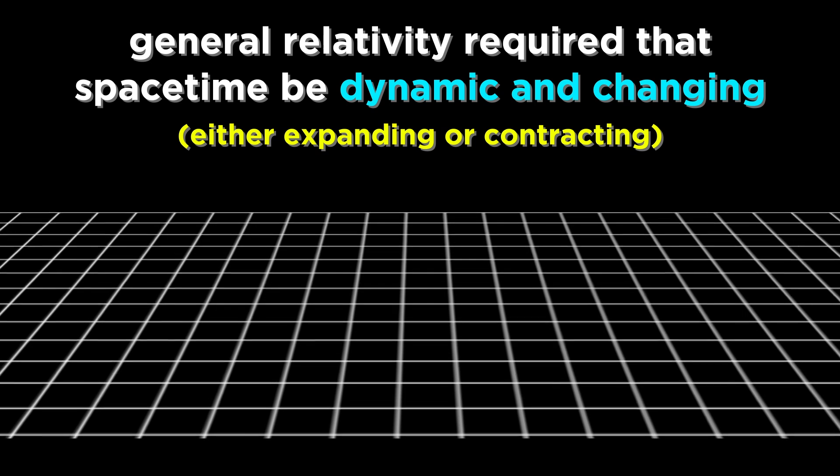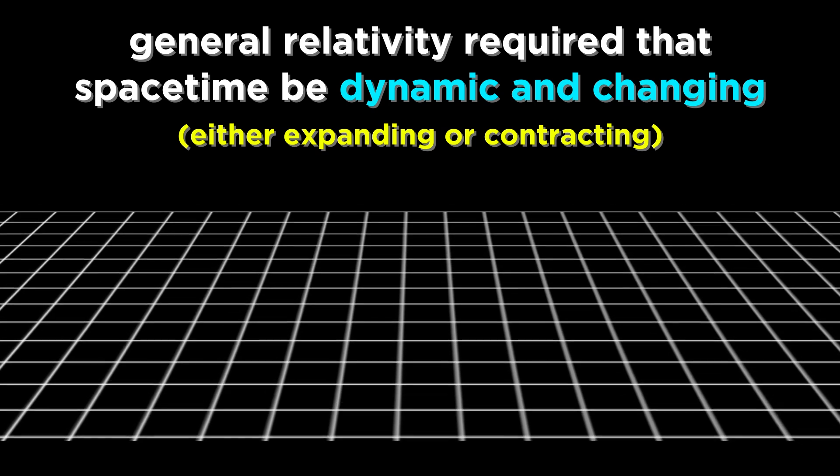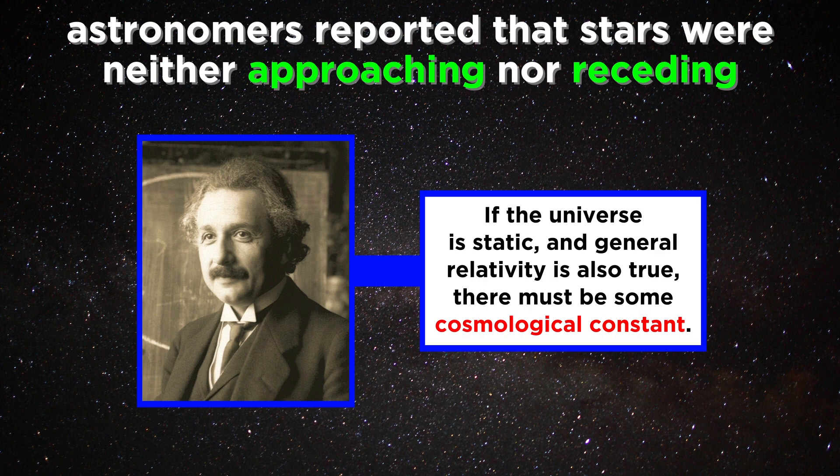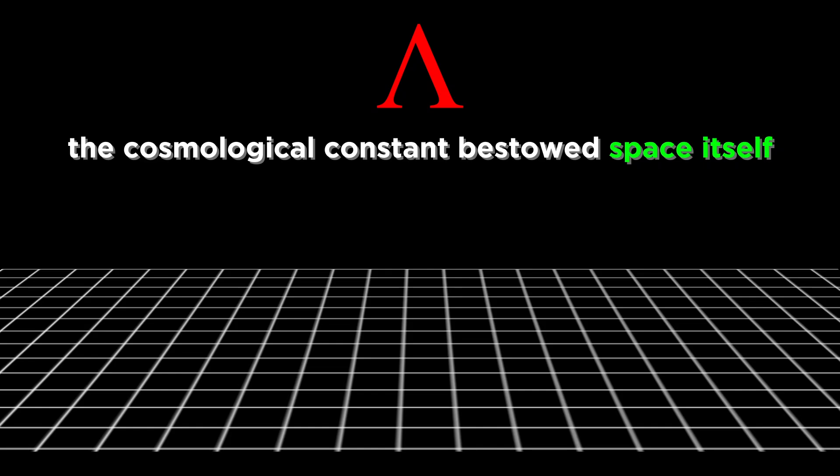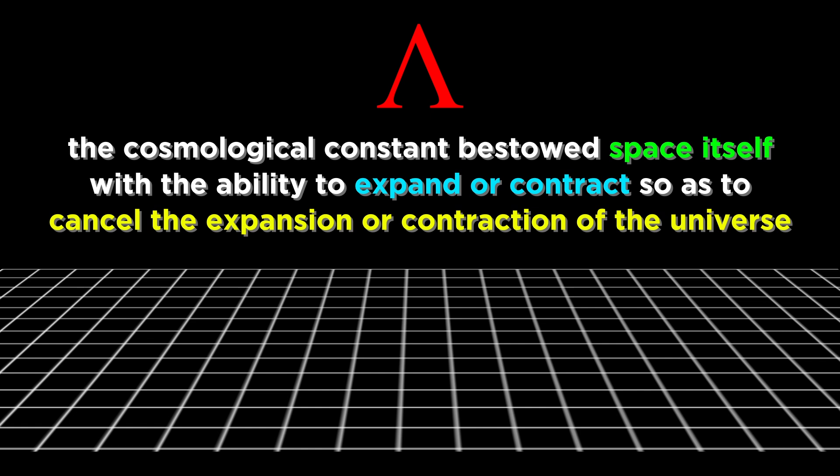But his own general theory of relativity required that spacetime be dynamic and changing, and therefore either expanding or contracting. At the time, astronomers reported that stars were neither approaching nor receding from our solar system, and Einstein was so convinced that the universe should be static that he introduced a modification that would reconcile this static universe with general relativity. This was called the cosmological constant, which bestowed space itself with the ability to expand or contract in such a way that precisely cancels out the expansion or contraction of the universe, allowing for the static universe he envisioned.